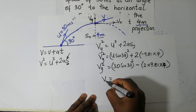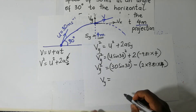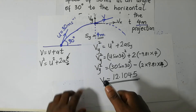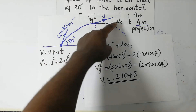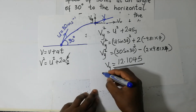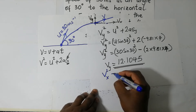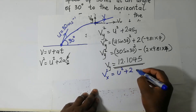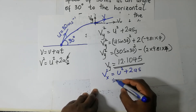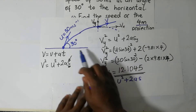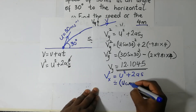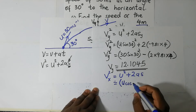So our value of Vy squared gives us V in the y direction. Now let's find the velocity in the x direction. To find Vx, we go ahead and say Vx squared equals U squared plus two times A times S. The initial velocity in the x direction is resolved here — we resolve it in the x direction.